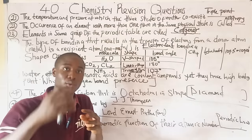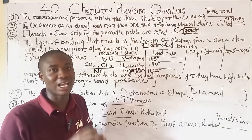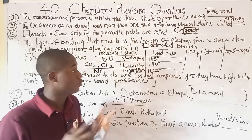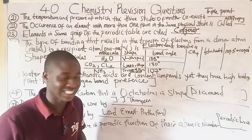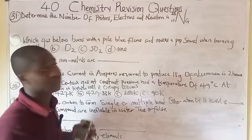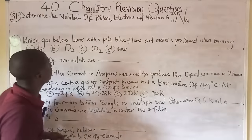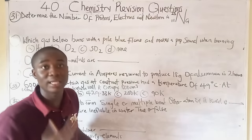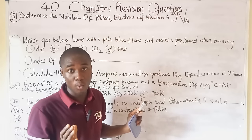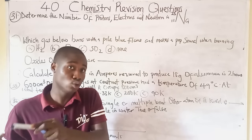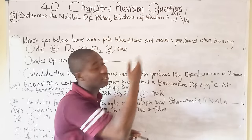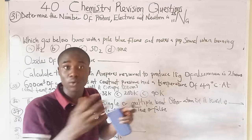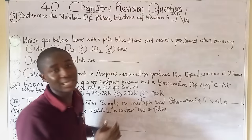Now we move to the last phase — calculation questions starting at question thirty-one. I already have detailed video lessons on these topics, and I'll put links in the description. Question thirty-one: determine the number of protons, electrons, and neutrons in a sodium atom. For an atom represented as ᴬ_Z X, A is the atomic mass (mass number) and Z is the atomic number.